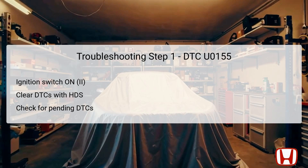In the first step of troubleshooting for DTC U0155, turn the ignition switch to the ON position, which powers the vehicle's electrical systems without starting the engine. Next, clear any existing DTCs using the Honda Diagnostic System (HDS), a specialized tool for Honda vehicles that allows for fault code management and system diagnostics. Once cleared, check for any pending or confirmed DTCs within the HDS, ensuring that U0155 is indicated. If U0155 appears, this confirms the failure.